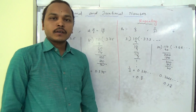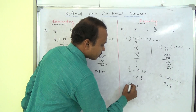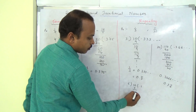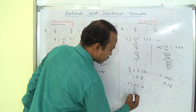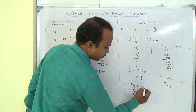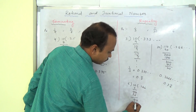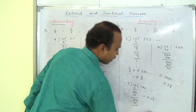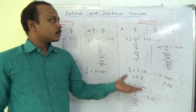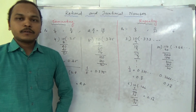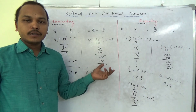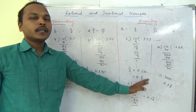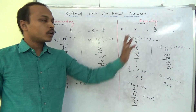These previous examples were terminating decimals. In any division, after multiple steps, if you get remainder 0, they are terminating decimals. If you never get remainder 0, they are repeating decimals.